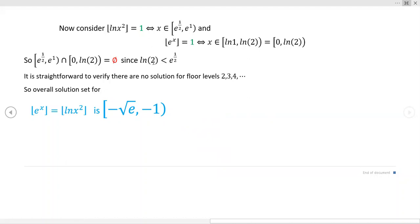And it's very, that's, the natural log of two is a number less than one, right? Each of the one-half is a number greater than one, okay? So there's no overlap in these two sets. And in a similar fashion, for the floor levels of two, three, and four, the very same thing is going to happen.